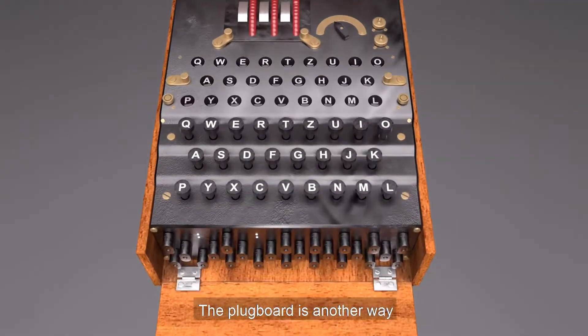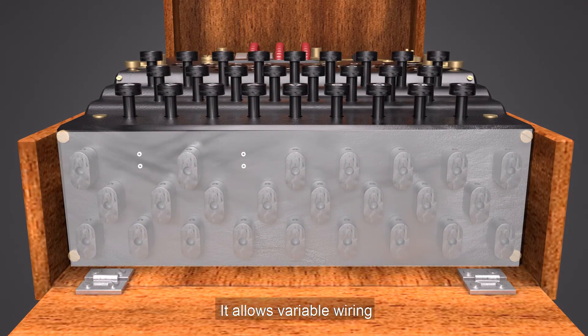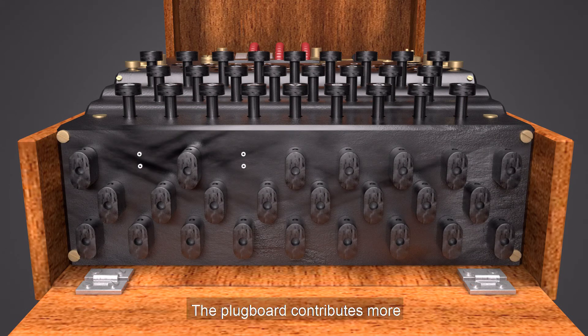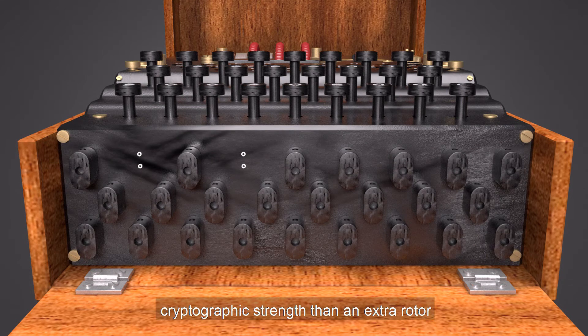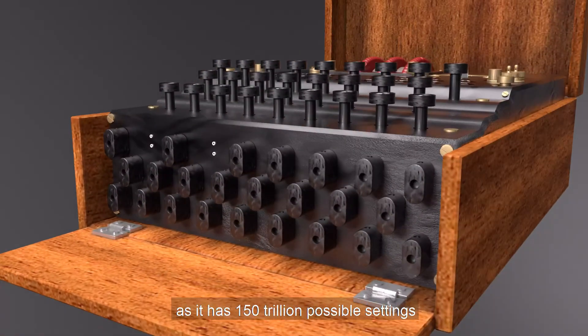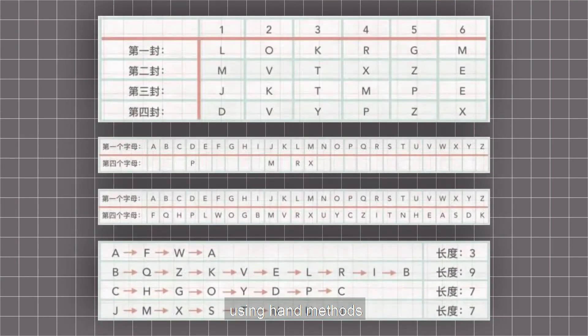The plugboard is another way for the letters to be switched around. It allows variable wiring that could be reconfigured by the operator. The plugboard contributes more cryptographic strength than an extra rotor, as it has 150 trillion possible settings. Enigma without a plugboard could be solved relatively straightforwardly, using hand methods. These techniques were generally defeated by the plugboard, driving cryptanalysts to develop special machines to solve it.